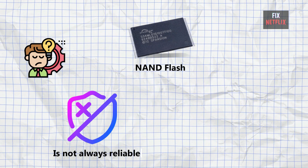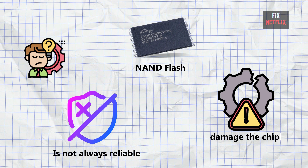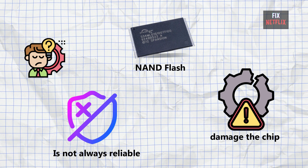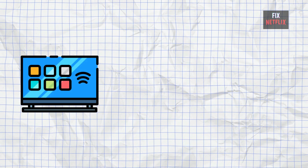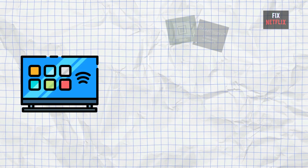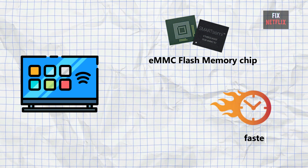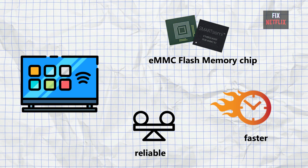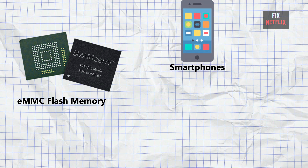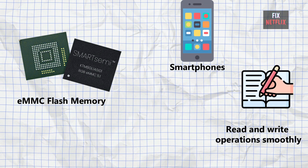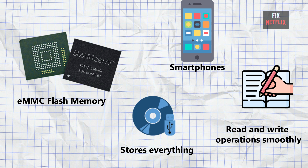But here's the problem: NAND flash isn't always reliable, especially inside a TV where the heat can damage the chip over time. It tends to fail more frequently. So what's the solution? Most modern smart TVs now use a single eMMC flash memory chip. Why eMMC? Because it's faster, more stable, and more reliable — like the internal storage you find in smartphones. It can handle both read and write operations smoothly, and it stores everything the TV needs to boot and run.